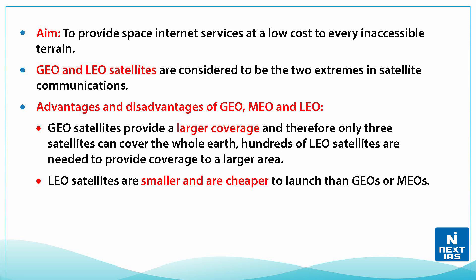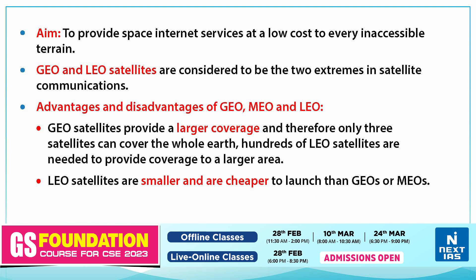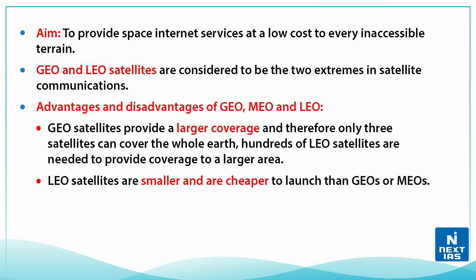The aim of this plan is to provide space internet services at low cost to every inaccessible terrain. The GEO and the LEO satellites are considered to be two extremes in satellite communications. GEO satellites provide larger coverage, and therefore only three satellites can cover the whole earth, whereas hundreds of lower earth orbit satellites are needed to provide coverage to a larger area.